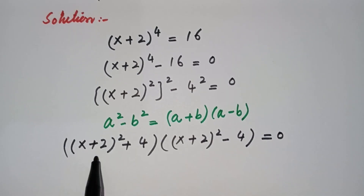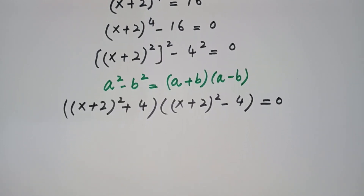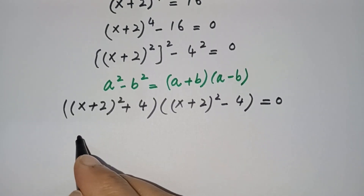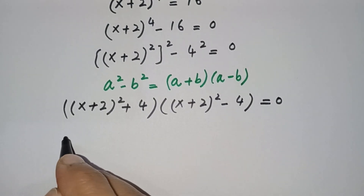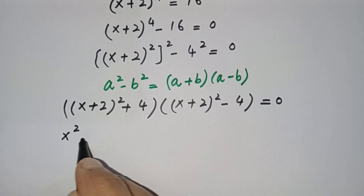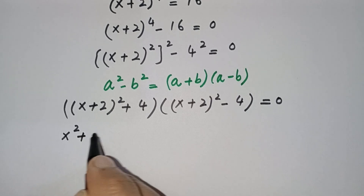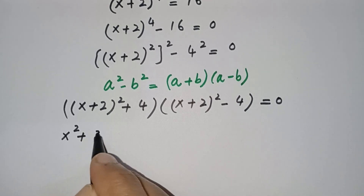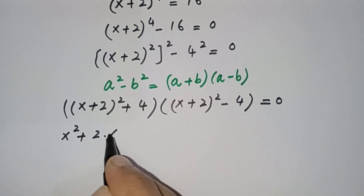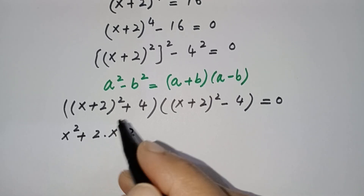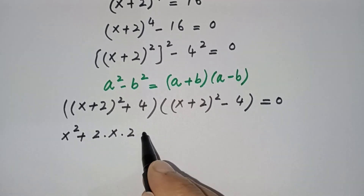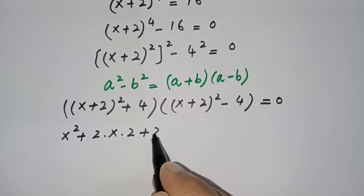Next step: expand (x + 2)². Using the identity, this gives x² + 2·x·2 + 2², which is x² + 4x + 4.